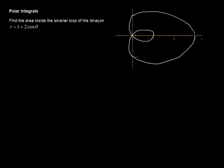This is the inner loop, so this is the area that we are looking for. And a little background on how we can find that: